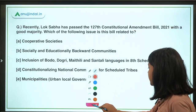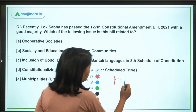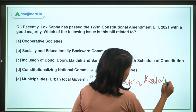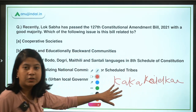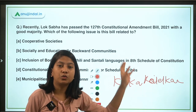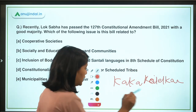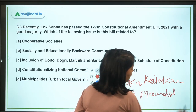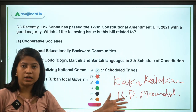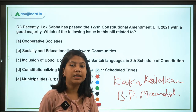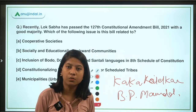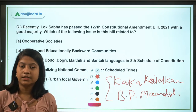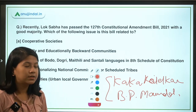As a task for viewers: the Kaka Kalekar Commission was the first commission formed to identify backward classes, followed by the B.T. Mandal Commission, whose recommendations led to 27 percent reservation for OBCs. The task is to find the years of formation of both these commissions and post them in the comments section.